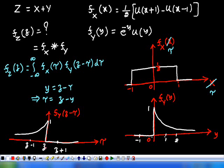This is f_Y(z - τ) — we have plotted it. The next step is to take the product of f_X(τ) and f_Y(z - τ) for different values of z, then find the integral (area) of that product curve to get f_Z(z). Consider the case z less than minus 1.